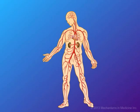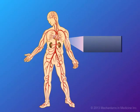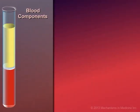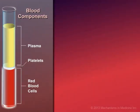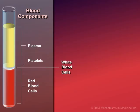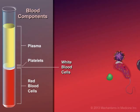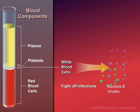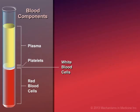Blood plays an important role in the body's immune system defense against germs and microorganisms, and is composed of plasma, platelets, red blood cells, and white blood cells. White blood cells, also called leukocytes, constitute the main part of the immune system, protecting the body against disease-causing organisms and fighting off infection.